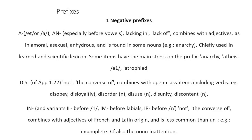The second prefix, 'dis-', means the converse of, combined with open-class items including verbs, for example 'disobey,' 'disloyal,' 'disorder,' 'disuse.' The prefix 'in-' and its variant 'im-' before labials means not — the converse of — combined with adjectives of French and Latin origin, and is less common than 'un-.' Examples include 'incomplete,' 'inattentive,' or 'inattention.'